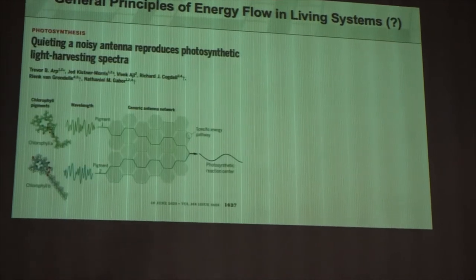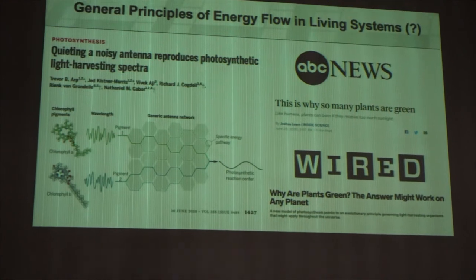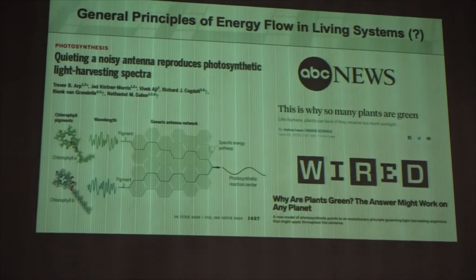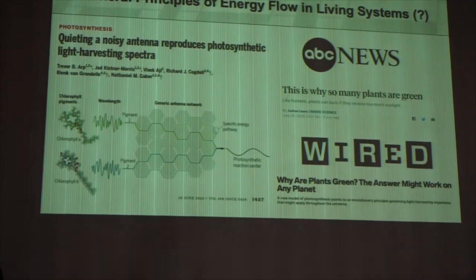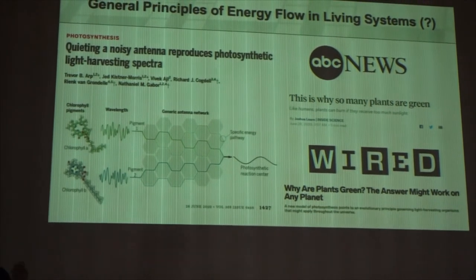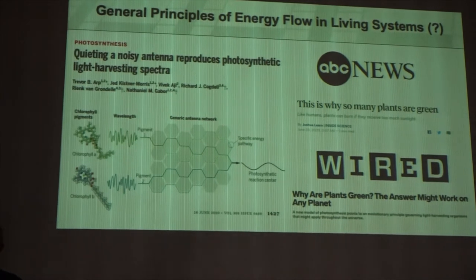Now we published this paper in Science in 2020. And one of the things that the news media picked up was this idea that we now had a model that might explain why plants are green on Earth. Because it says that it should avoid the peak because that's where noise is the highest.